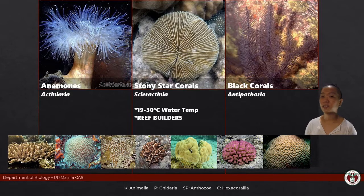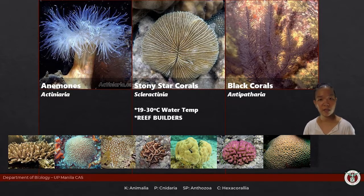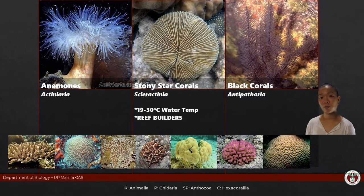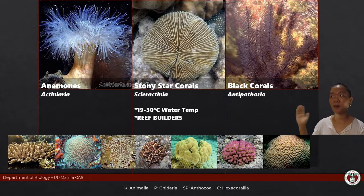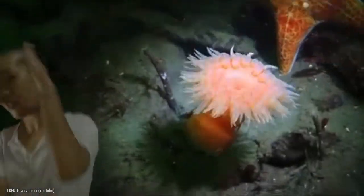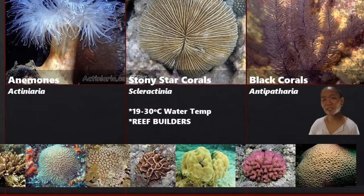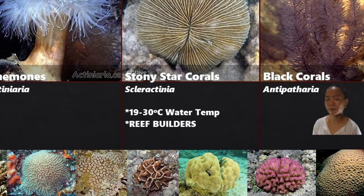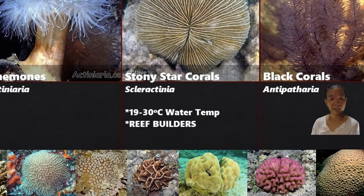Hexacoralia are the blockbusters — when we think of corals, these are the dominant ones you see in a reef. You also have soft-bodied anemones; though polyps generally stay put, some anemones can move when threatened. Stony corals — scleractinians — have skeletons made of calcium carbonate, which is why the term 'sclero' relates to stone.